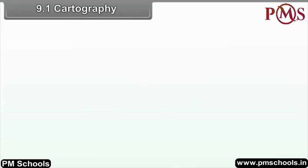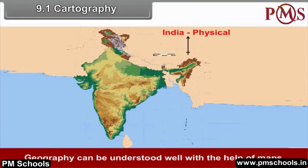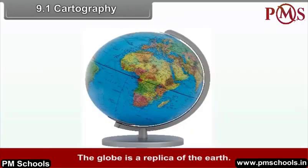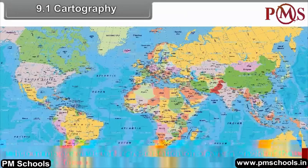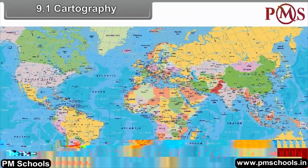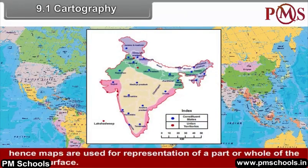9.1 Cartography. Maps are the tools of geographers. Geography can be understood well with the help of maps. Geographical features are often represented by maps. The globe is a replica of the Earth, but it cannot be used to show detailed information. Hence, maps are used for representation of a part or whole of the Earth's surface.